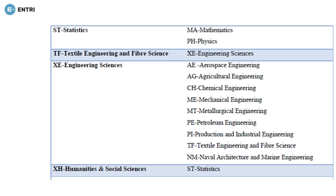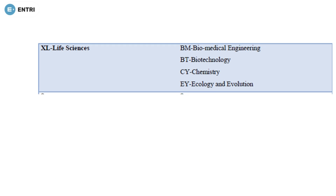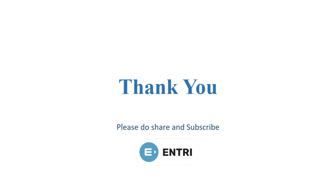Engineering Sciences will be one of the most popular secondary papers on the list. Humanities and Social Science will have only one secondary paper, which is Statistics. Life Sciences will have four secondary paper options: Biomedical Engineering, Biotechnology, Chemistry, and Ecology and Evolution. Remember, if you are attending two papers, you need to pay twice. I hope your confusion about choosing a two-paper combination has been cleared. Please subscribe and share this video. Thank you.